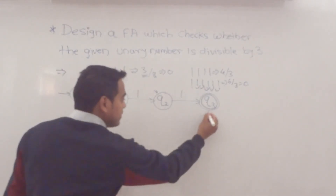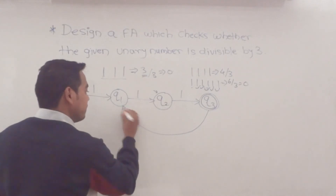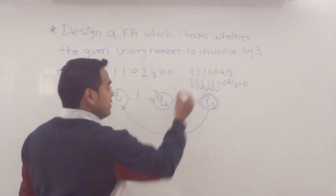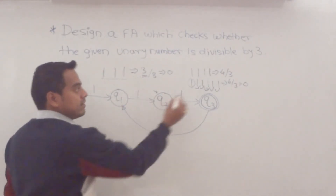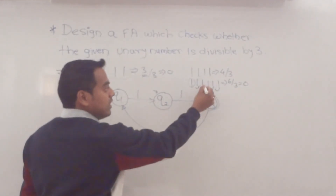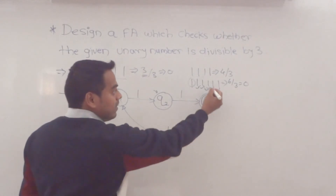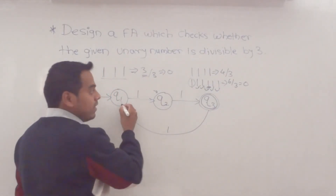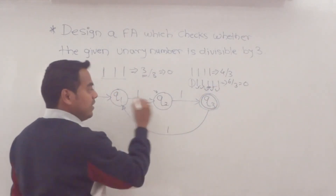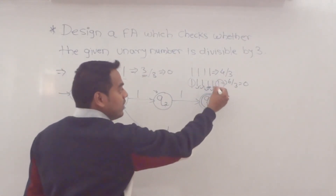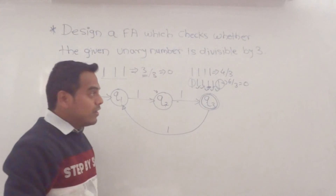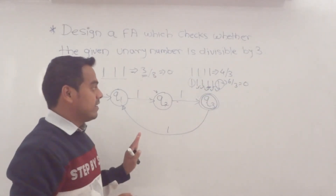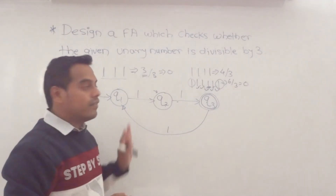So if we consider the transition at q3 state going back to q1: 1st→q1, 2nd→q2, 3rd→q3, 4th→q1, 5th→q2, 6th→q3. Means the 6th one brings us to the final state q3. So 6 ones is accepted by our final state.